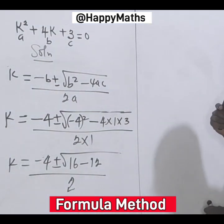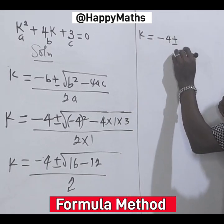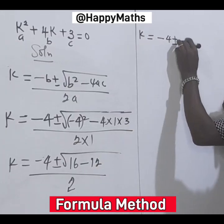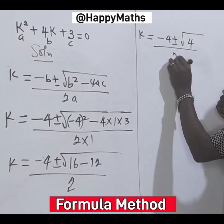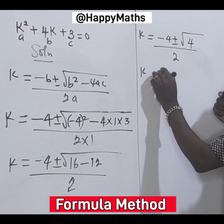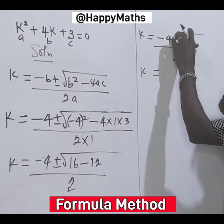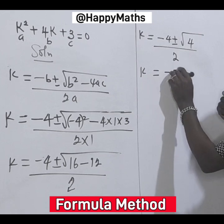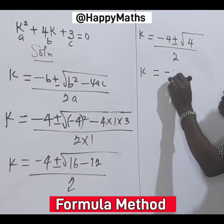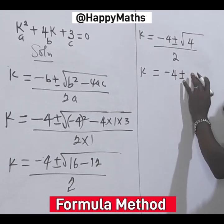Hit the subscribe button, follow us for more. Then k equal to minus 4 plus or minus, this will give us 4 over 2. K equal to minus 4 plus or minus root 4 equals minus 4 plus or minus 2.